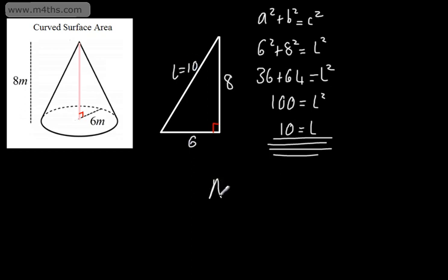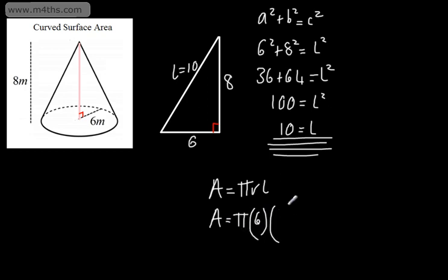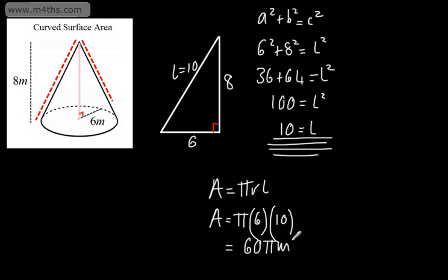So all we need to do now is write that the area is pi r l. We need the curved surface area — it's not a solid, so I don't need to include the circle on the bottom. The area is pi multiplied by the radius, which is 6, multiplied by the slant height of 10. So this is going to be 60 pi, and that is going to be meters squared.